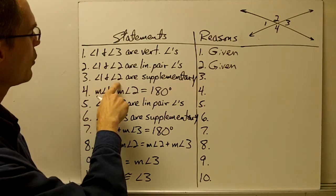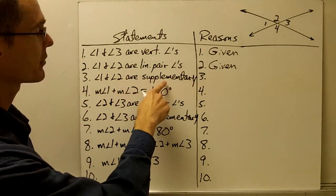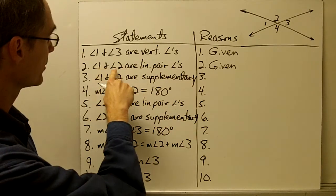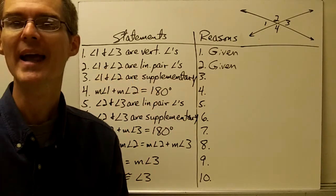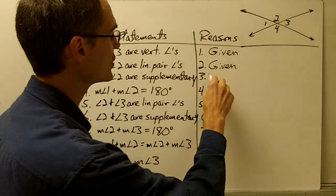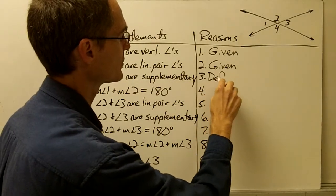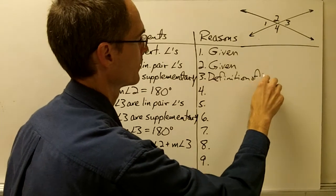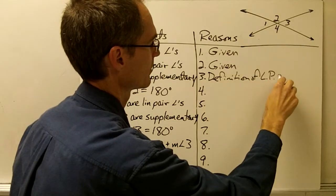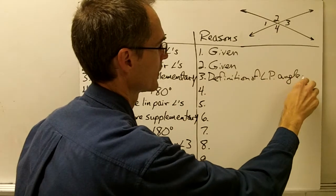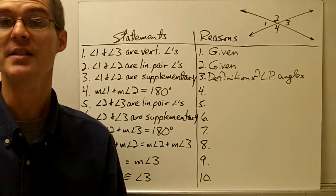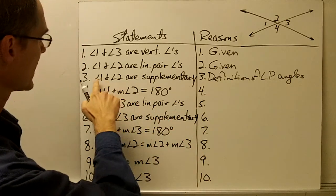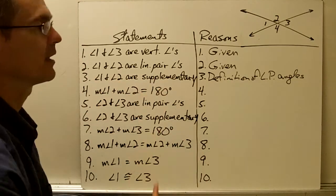Statement 3: angle 1 and angle 2 are supplementary. How do I know that? I know they're supplementary because they are linear pair angles, and that's the definition of linear pair angles. The definition says linear pair angles are adjacent and supplementary — that's how I know angles 1 and 2 must be supplementary.